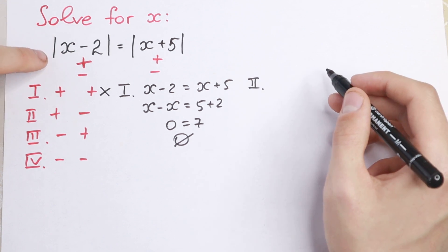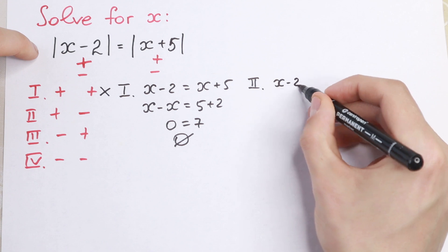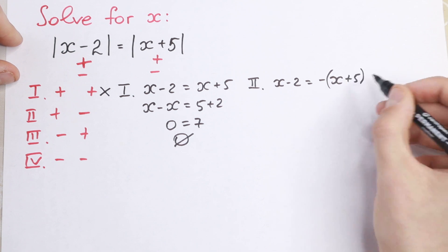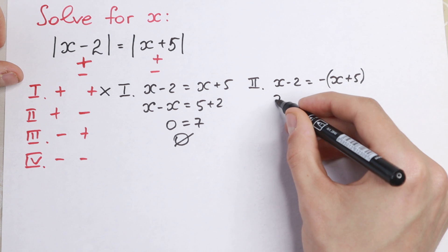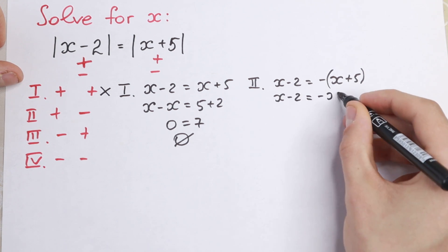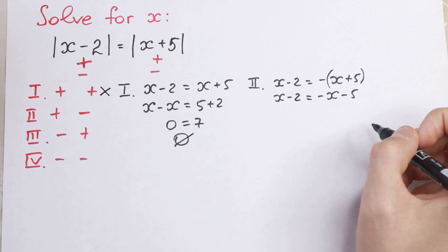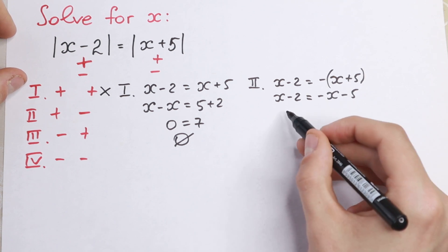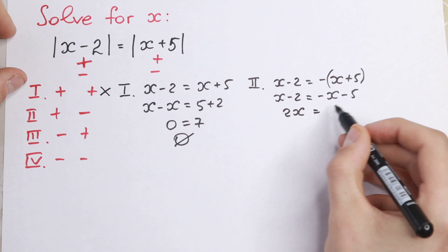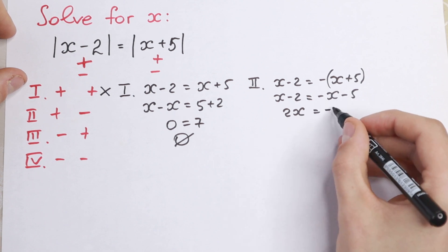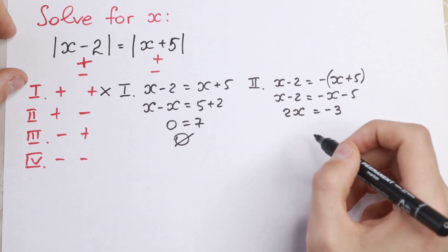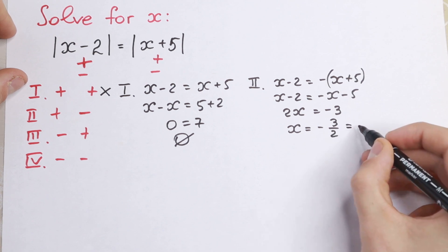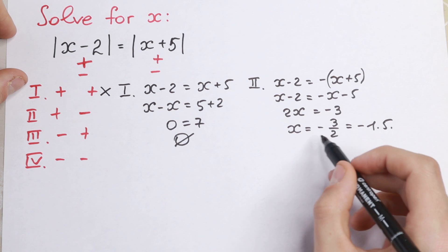Let's solve the second case. This one is positive, so x minus 2, and this one is negative — minus, and it's really good to write parentheses first — x plus 5. So x minus 2 equals minus x minus 5. Bring the x's to the left: x plus x gives 2x, and minus 5 plus... we get 2x equals minus 3. Dividing by 2, we get x equals minus 3 over 2, or as a decimal, minus 1.5. So we find one root.